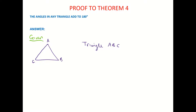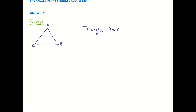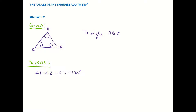Now we want to state what we want to prove based on the question. I'm back up on my drawing in the given part. I'm going to label angle 1 for A, angle 2 for B, and angle 3 for C, to make it a little bit easier. So what we want to state in our 'to prove' is that angle 1 plus angle 2 plus angle 3 is equal to 180 degrees. The question said the angles in any triangle add up to 180 degrees, and that's what we want to prove.